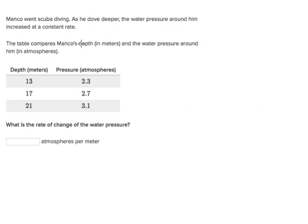The table compares Marco's depth in meters and the water pressure around him in atmospheres. One of the things that jumps out at me in interpreting this function is whether it's a linear or nonlinear function. Because it says the pressure increased at a constant rate, that tells me this is a linear function.